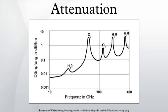Electromagnetic attenuation decreases the intensity of electromagnetic radiation due to absorption or scattering of photons. Attenuation does not include the decrease in intensity due to inverse square law geometric spreading. Therefore, calculation of the total change in intensity involves both the inverse square law and an estimation of attenuation over the path. The primary causes of attenuation in matter are the photoelectric effect, Compton scattering, and, for photon energies of above 1.022 MeV, pair production.